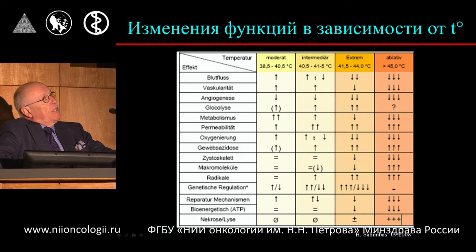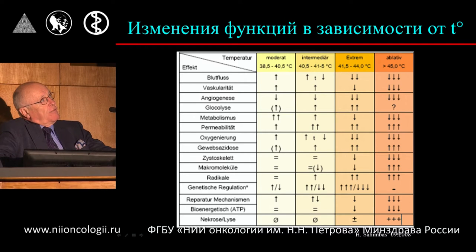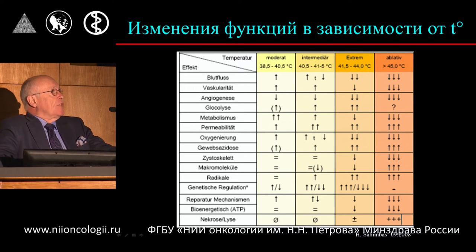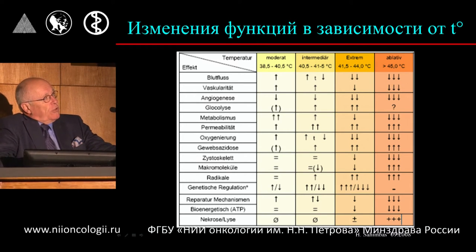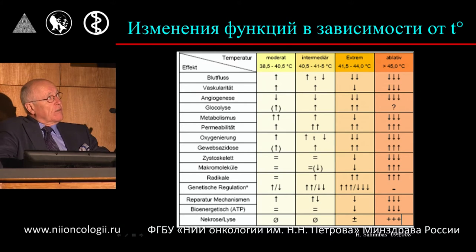A very similar situation occurs with angiogenesis. You can see the metabolism and the permeabilization of the tissue here. In low temperatures there is an increase in metabolic processes, and if the temperature goes beyond 41.5 to 44 degrees, there is a decrease in metabolism but permeability is increased. This is due to oxygenation changes in the tissue — first there is an increase and then a decrease. You can also see that tissue acidosis changes: the higher the temperature, the higher the tissue acidosis. There are different reparatory mechanisms, and you can see that necrosis can be associated with temperatures over 45 degrees centigrade.